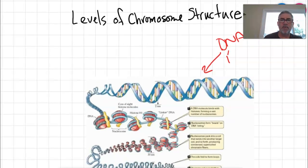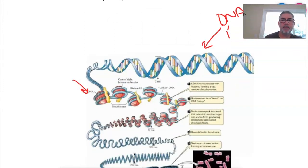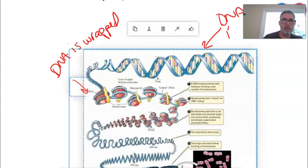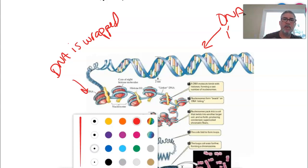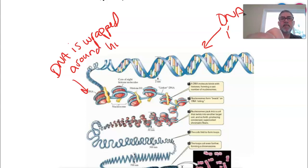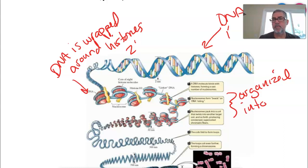Then we can come down over here a little bit, and we see that the DNA is wrapped around histones. Remember, these histones attract DNA, and they're wrapped around them, and that's the secondary form of processing.